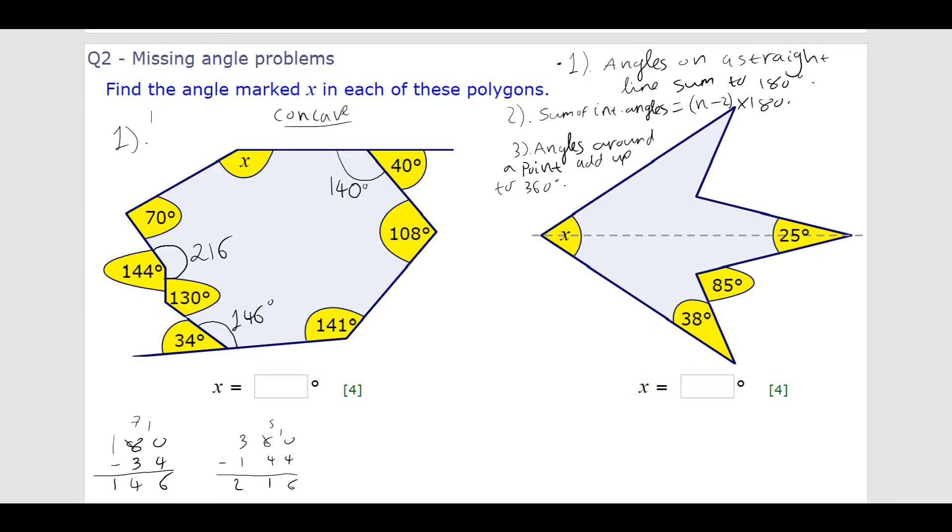So, now, we know all of the interior angles. But, what are they going to add up to? Well, luckily, we can use our second theorem, or our second rule, that the sum of the interior angles is n minus 2 times 180. So, all we need to do is count how many sides there are. So, I'm just going to make a little division here, my page. So, if I count the sides, I've got 1, 2, 3, 4, 5, 6, 7, 8.